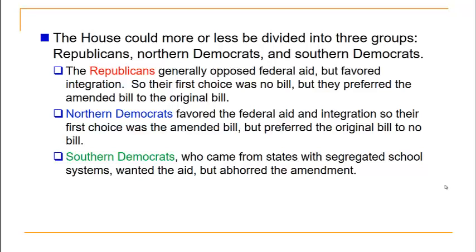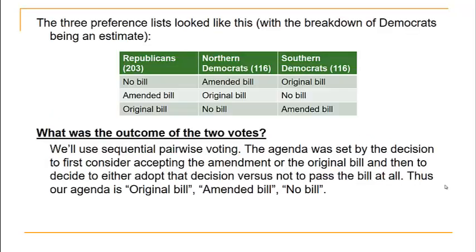The House was divided into three groups: Republicans, northern Democrats, and southern Democrats. Republicans opposed federal aid but favored integration, so their first preference was no bill at all, but they preferred the amended bill over the original bill. Southern Democrats wanted the aid but opposed the amendment. The three preference lists, including the number in each group, are shown here.